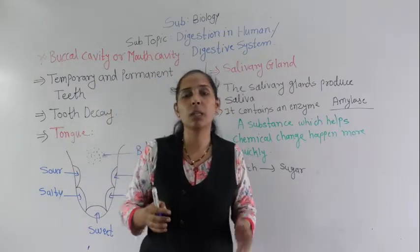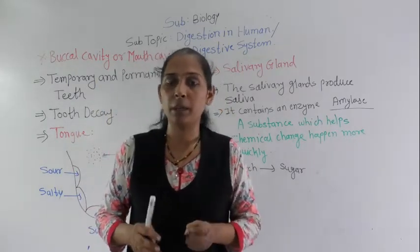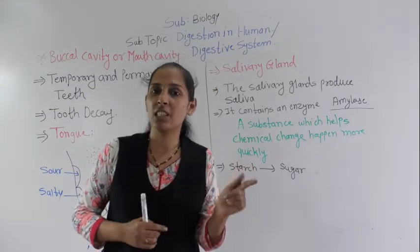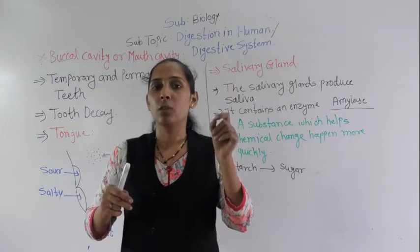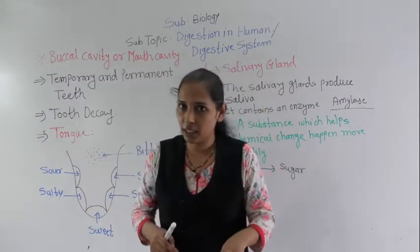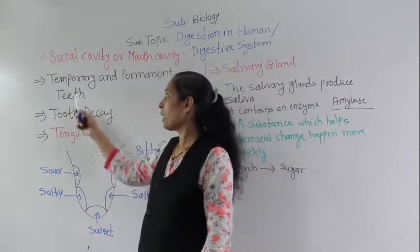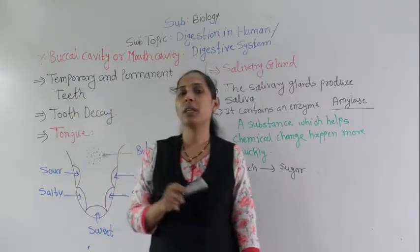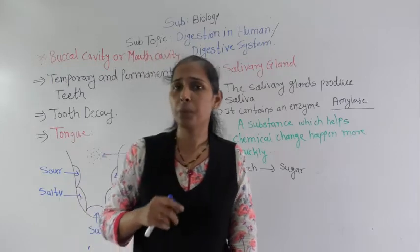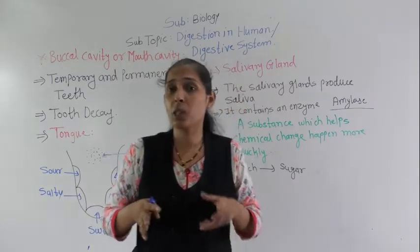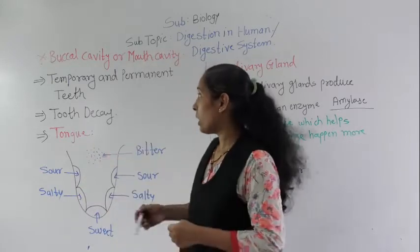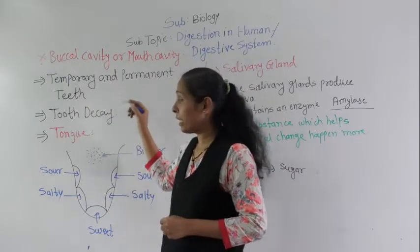Temporary means that after a certain period of time, the teeth fall out — at the age of 6 to 8. That set of teeth is called the first set of teeth, also known as temporary teeth, and also called milk teeth. Milk teeth are smaller and not as strong.